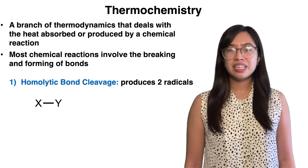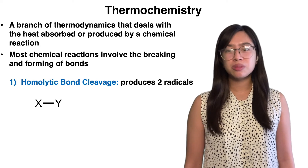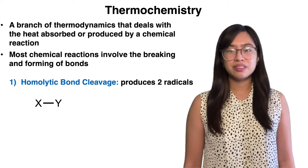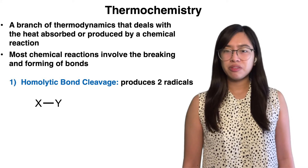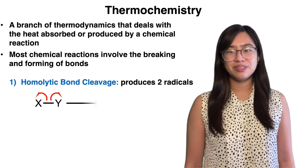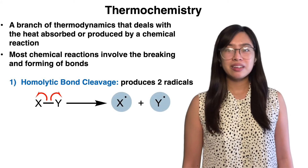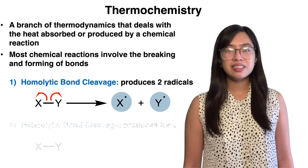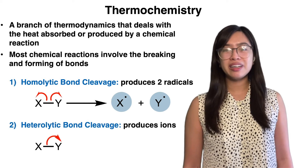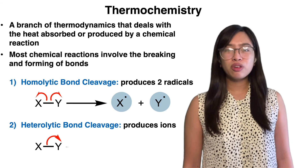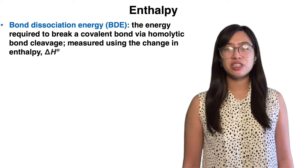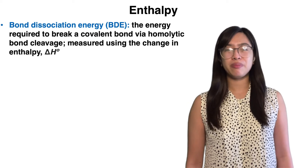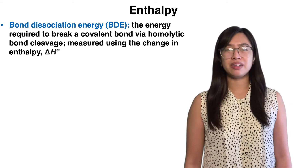Two ways that a bond can break are called homolytic cleavage and heterolytic cleavage. Homolytic bond cleavage creates two uncharged molecules called radicals, where each species has an unpaired electron, and this type of reaction uses single-headed curved arrows called fish hooks. Heterolytic bond cleavage, often shown with a two-headed curved arrow, forms two charged species called ions. We'll mainly focus on the energy required to break a covalent bond via homolytic bond cleavage.